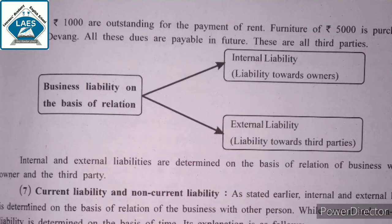Humne rupees 50,000 borrow kiye Bhavna Bank se, condition ke saath — after three years mein redeem karna hai. Redeeming means future mein pay karna. Rupees 2,000 purchased on credit — credit based pay karna hai. Rupees 1,000 outstanding for payment of rent. Rupees 5,000 furniture purchased on credit from Devang — future mein pay karna hai. So, these are all the liabilities.